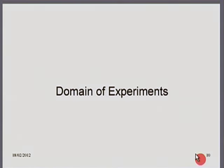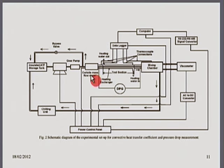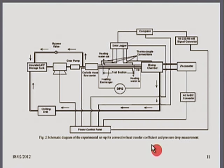Next we come to domain of experiments, where you have to inform about the experimental setup. Usually in any experimental setup there is a test section where the action really happens, along with a data logger, chilling unit, power control unit, AC/DC converter and so on. In this figure the test section occupies a very small part and you do not really see what the test section is about, whereas the peripherals occupy a very significant part and the significant part occupies an insignificant part. Do not let this happen. This figure may be okay as the first figure in an experimental setup chapter in a report or thesis, but it is definitely not okay for a paper of any kind.